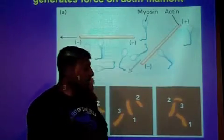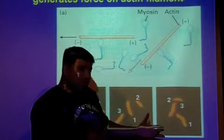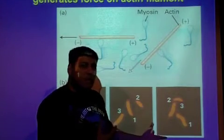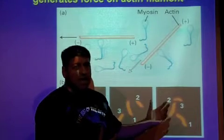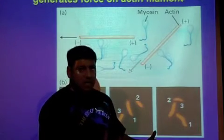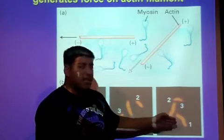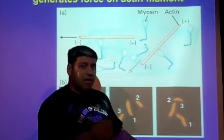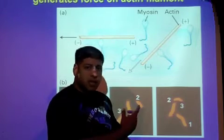This is showing that as the myosin walks along the actin filament, it's producing force, pushing the actin filament in different directions. In this case, the actin filament is moving towards its minus direction, because myosin is walking towards the plus direction.